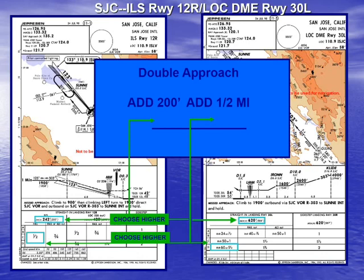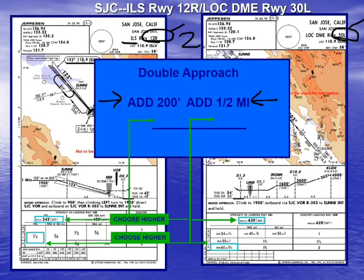Now let's use our double approach rule, which we get again from the table shown earlier. If we have two different approaches using two different runways — which could be the same strip of pavement but two different ends — we have runway 12 right and runway 30 left. In this context, that counts as two different runways. Importantly, we also have two different navigational facilities: an ILS and a localizer DME, each with different frequencies. So not only two approaches, but two different nav aids and two different runways. If all that is met, we can use our double approach mode.